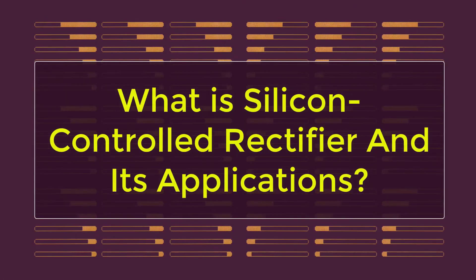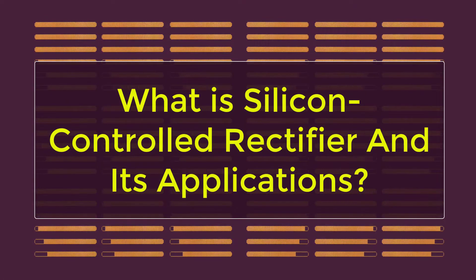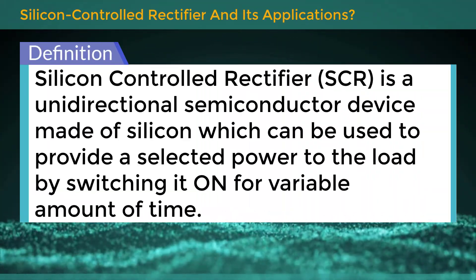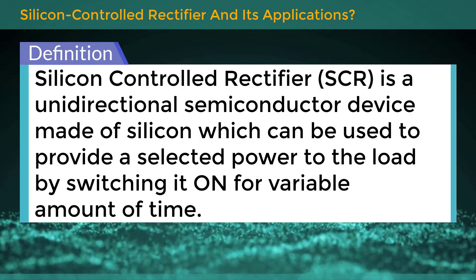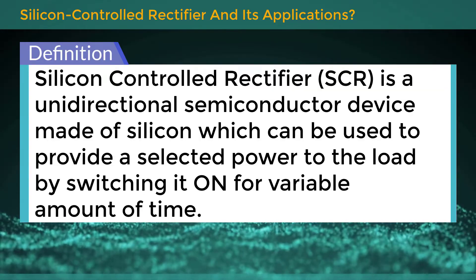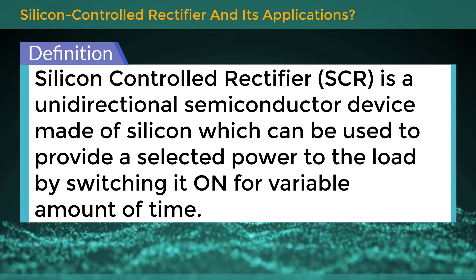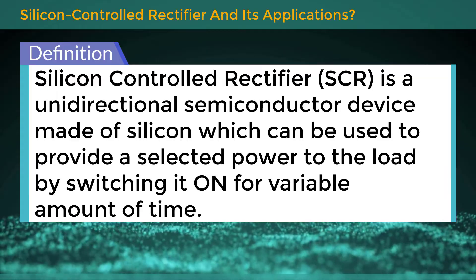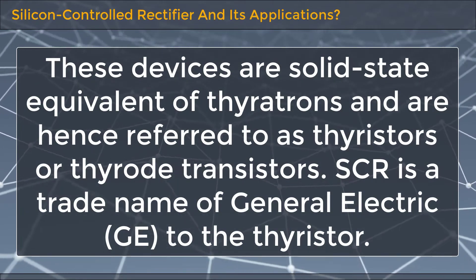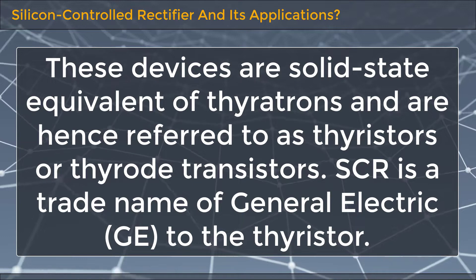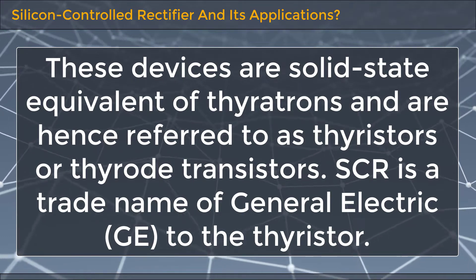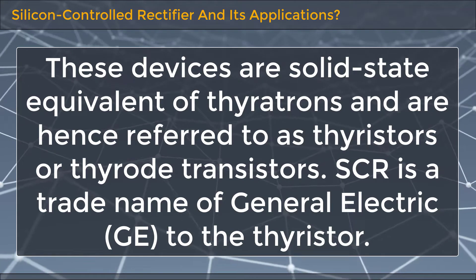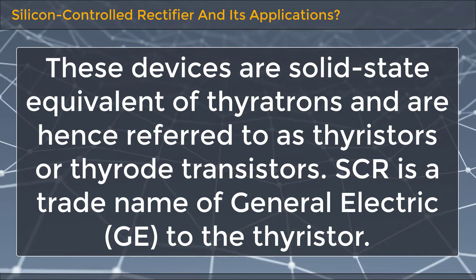What is Silicon Controlled Rectifier and its applications? Silicon Controlled Rectifier is an unidirectional semiconductor device made of silicon which can be used to provide a selected power to the load by switching it on for a variable amount of time. These devices are solid state equivalents of thyratrons and are hence referred to as thyristors or thynode transistors. SCR is a trade name of General Electric for the thyristor.